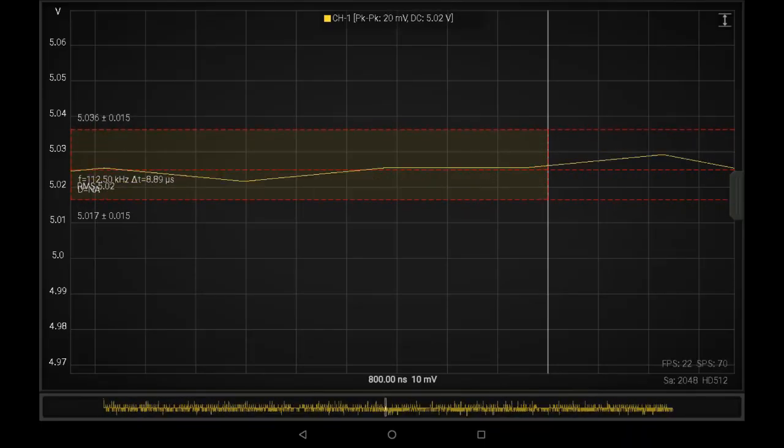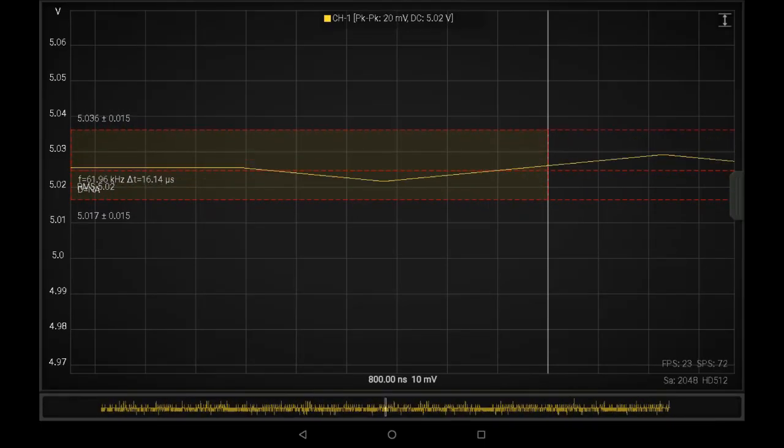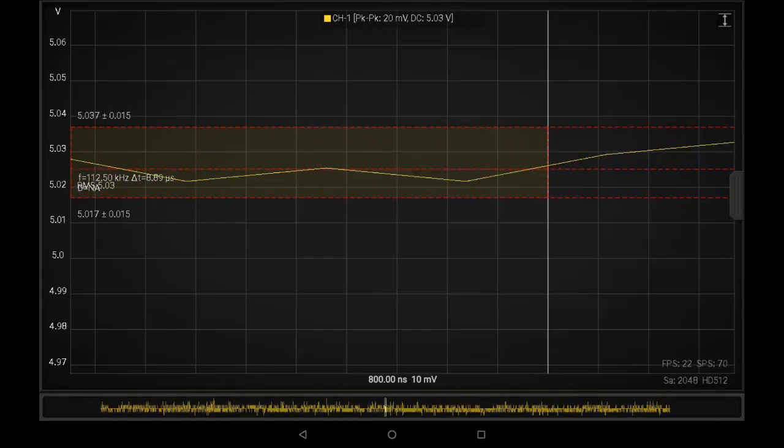5 volts across a 1 ohm resistor. It's quite a big load on there. Peak to peak, 20 millivolts. Not that bad.